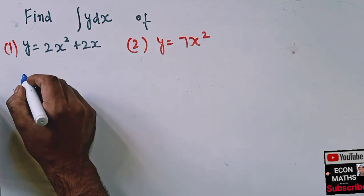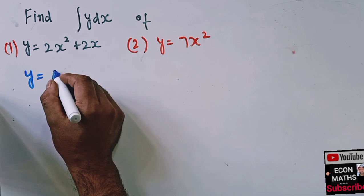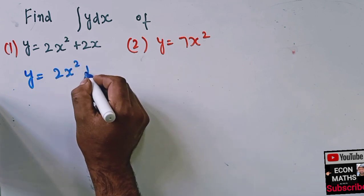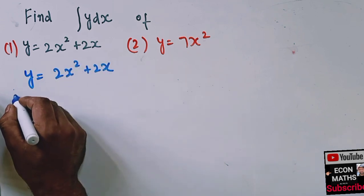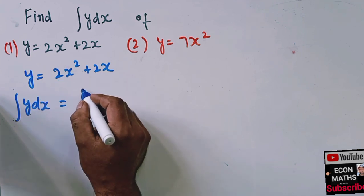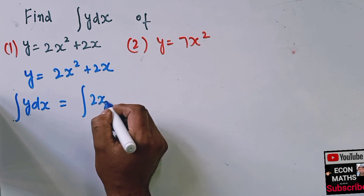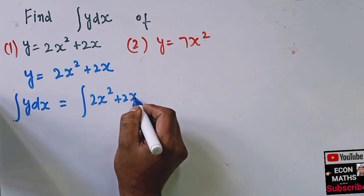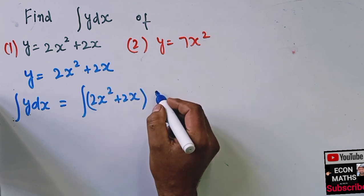We are being given y is equal to 2x squared plus 2x, that means we need to find out the integral of y dx. That means taking the integral of this function, 2x squared plus 2x, we need to take the integral with respect to x.